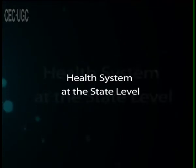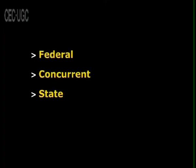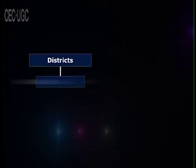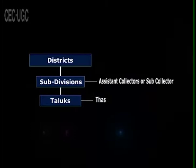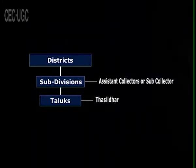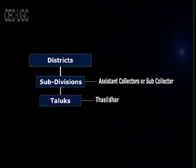Now we have the health system at the state level. The health subjects are divided into three groups: federal, concurrent, and state. The subjects in the state list are the responsibilities of the state, including provision of medical care, other preventive health services, and pilgrimages within the state. There are 640 districts in India based on the 2011 census. Most districts in India are divided into two or more subdivisions, each in charge of an assistant collector or sub-collector. Each division is again divided into taluks, in charge of a tahsildar. A taluk usually comprises between 200 to 600 villages.